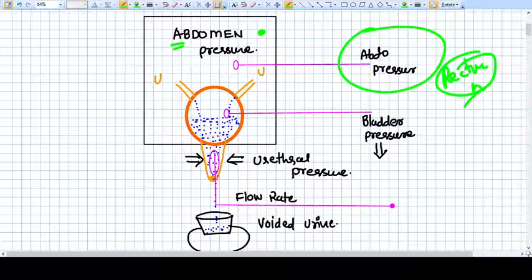If rectum is not available, then you can also go for a deep vaginal probe. That is also recording the pressure of abdomen. So what we are getting here is abdomen pressure.